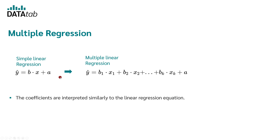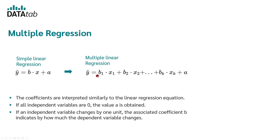The coefficients can be interpreted similarly to the linear regression equation. If all independent variables are zero, we get the constant value a. If an independent variable changes by one unit, the corresponding coefficient b indicates by how much the dependent variable changes. For example, if x1 is age and b1 is 10, then for every additional year, y increases by 10. If the person is 5 years old, we have 5 times 10, which equals 50, so y increases by 50.